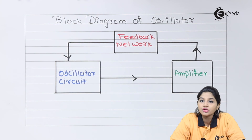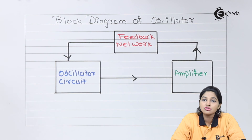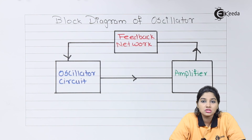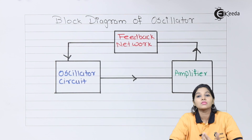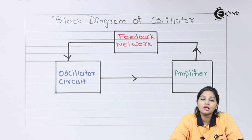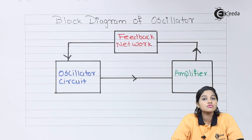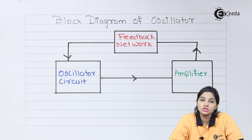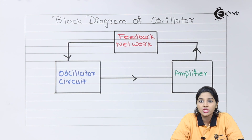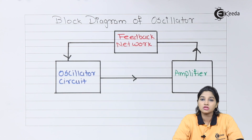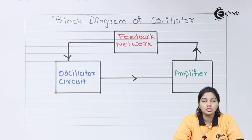Due to positive feedback, the instability of the circuit is very high, because of which we get either sinusoidal or non-sinusoidal oscillations at the output. The feedback network consists of either resistors, capacitors, or inductors, or a combination of these — the same elements that make up the oscillator circuit. The oscillator always uses positive feedback, due to which the gain of the circuit is very high, causing oscillation production at the output.